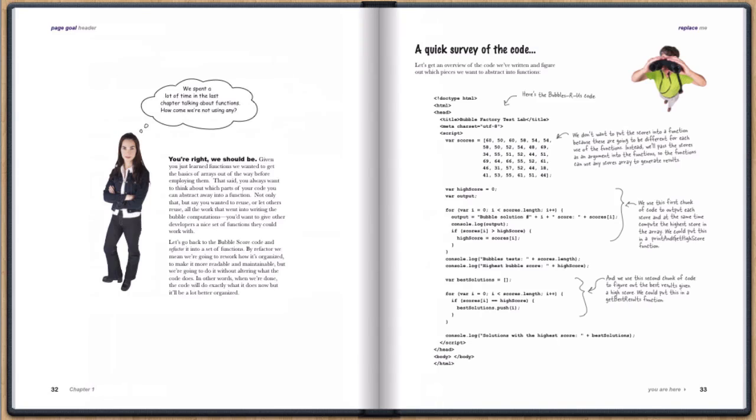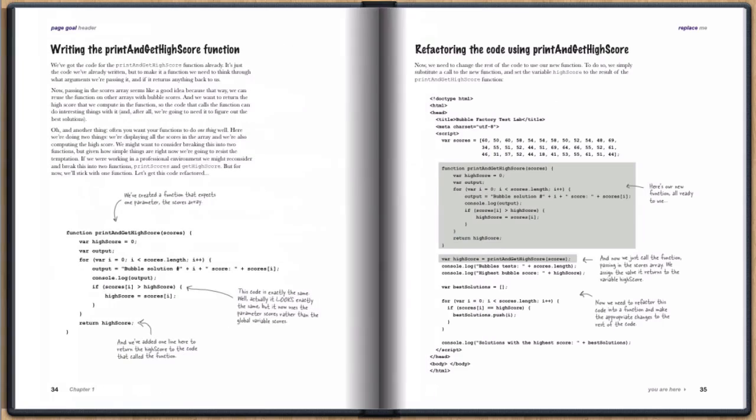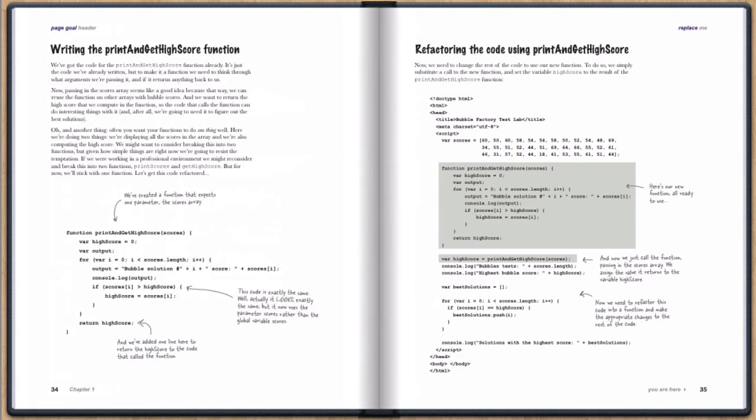So far in this chapter, our code is not organized that much, and so to organize the code a bit better, and to more easily allow us to reuse the code to do computations like find a high score or find the best bubble solutions, we're going to refactor or reorganize the code to use functions.